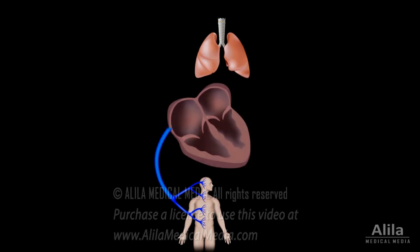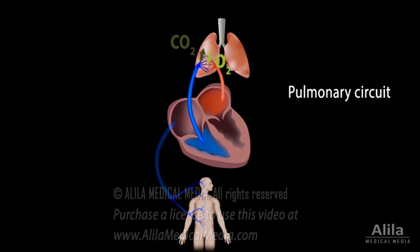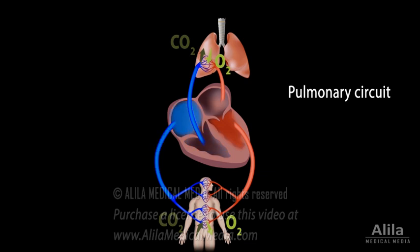Oxygen-poor blood from the body returns to the right side of the heart, where it is pumped to the lungs. In the lungs, blood picks up oxygen and releases carbon dioxide. Oxygen-rich blood returns to the heart's left side to be pumped to the body's tissues, where it unloads oxygen and picks up carbon dioxide. The resulting deoxygenated blood again returns to the heart's right side to complete the cycle.